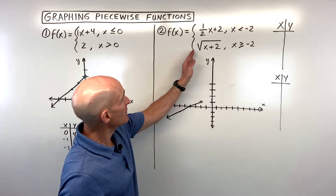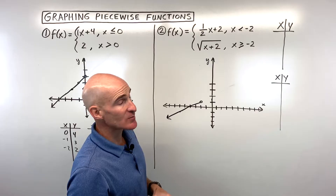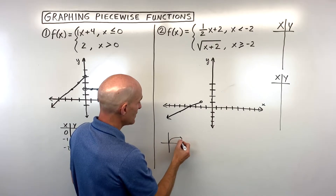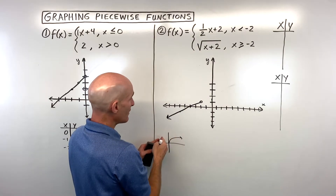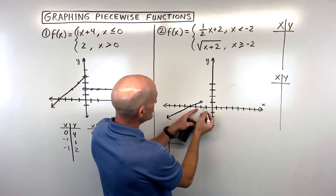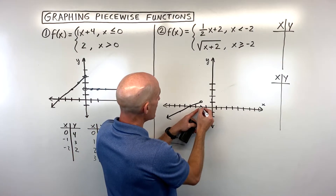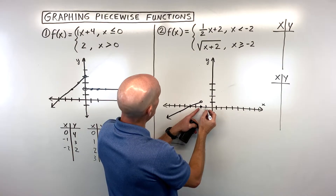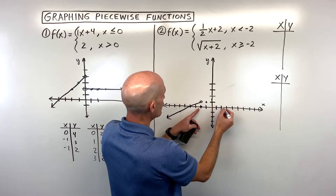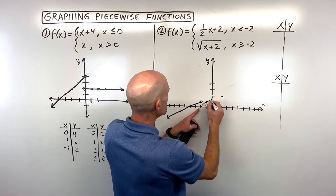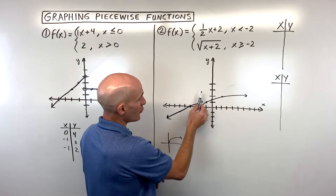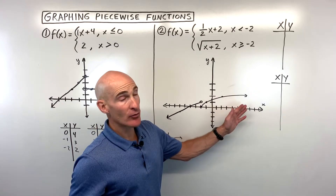The second equation is y equals the square root of x plus 2. Square root graphs look like a curve starting at a point, and the plus 2 shifts the graph left 2, so it starts at x equals negative 2. At x equals negative 1, that's the square root of 1 which is 1; at x equals 2, that's the square root of 4 which is 2. The graph curves from there, and it's still a function — passes the vertical line test — with a closed circle at negative 2 and an open circle on the first piece.